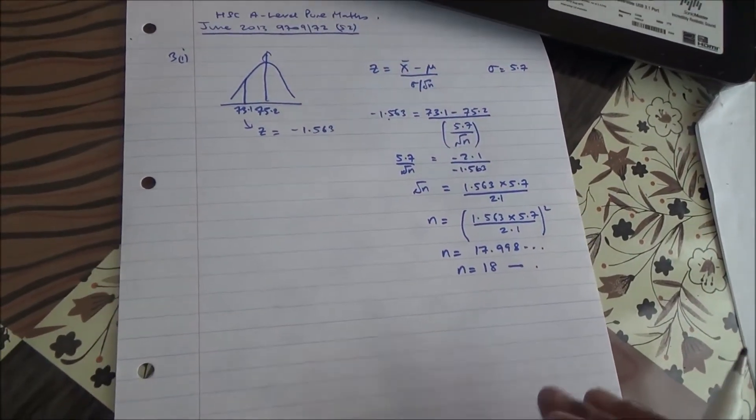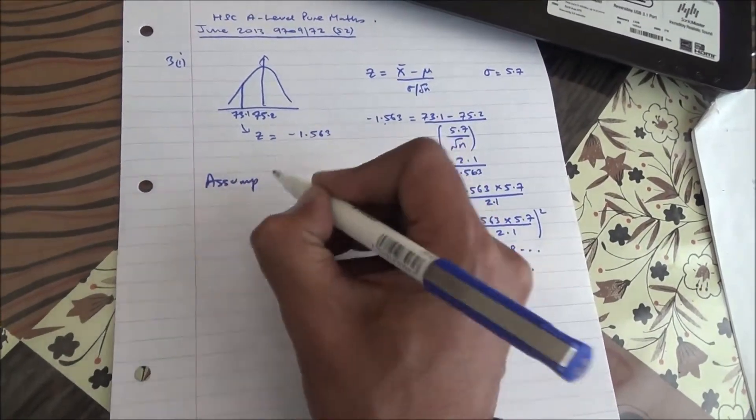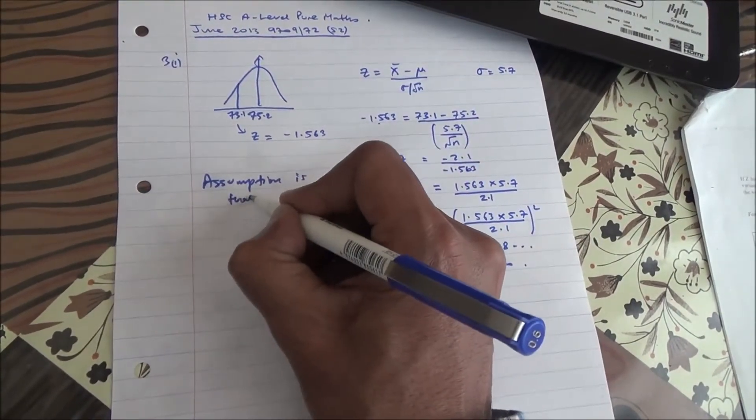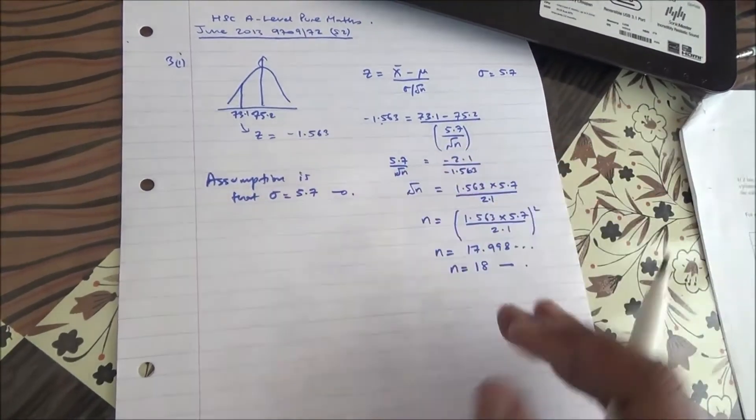Also we need in the first part to state our assumption. The assumption necessary for our calculation is that the standard deviation as given is 5.7.